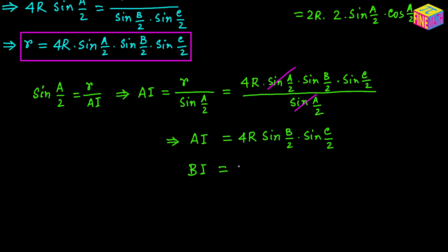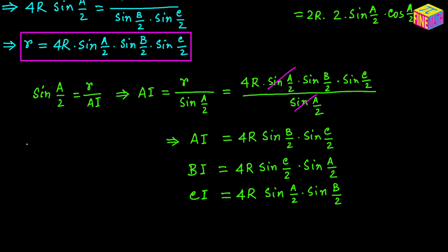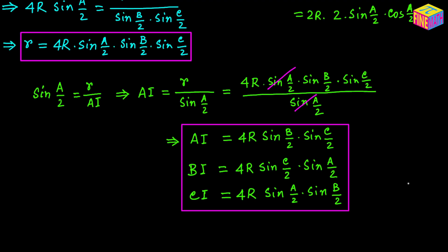Similarly, we can prove that BI = 4R·sin(C/2)·sin(A/2), which is the distance of vertex B from the incenter. And CI = 4R·sin(A/2)·sin(B/2), the distance of the incenter from vertex C. These are another set of very important properties. That covers all the relationships we needed to derive for the triangle and its incircle. Hope everything made sense — thank you for watching, see you in the next video.